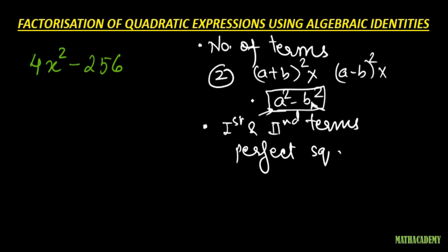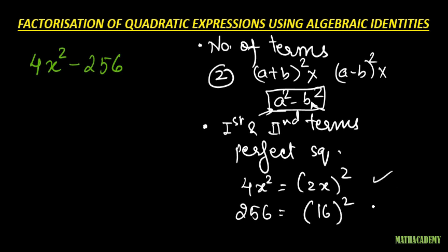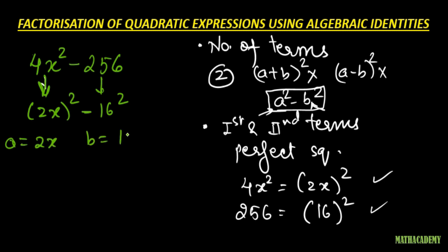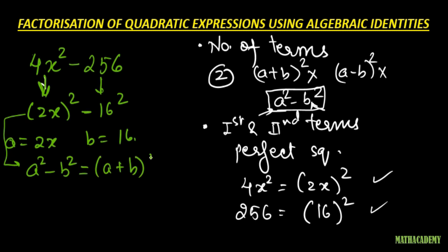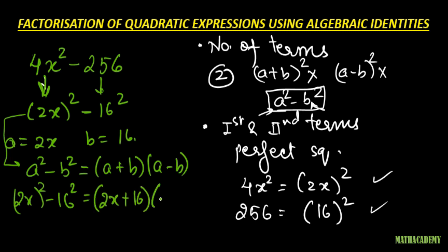To bring the algebraic expression into the form a² - b², the first and second terms need to be perfect squares. We see that 4x² can be written as (2x)² and 256 can be written as 16². So both of them are perfect squares. We write 4x² as (2x)² and 256 as 16². Our a is 2x and b is 16. So this expression becomes the form a² - b², which is (a + b)(a - b), giving us (2x + 16)(2x - 16).